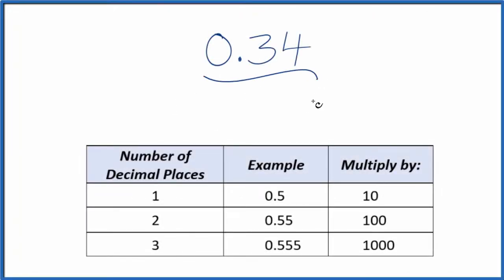Let's write the decimal 0.34 as a fraction. First, let's call it 0.34 over 1. It's still 0.34, and we just divided by 1, but now it's starting to look like a fraction.